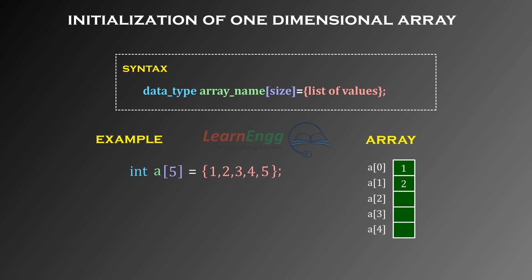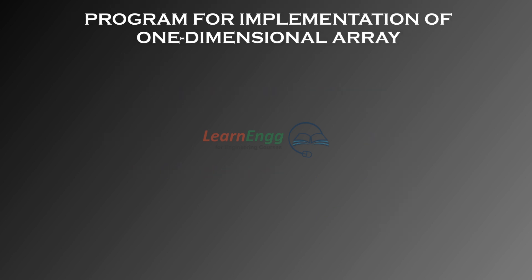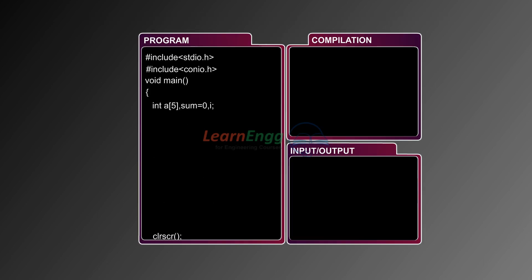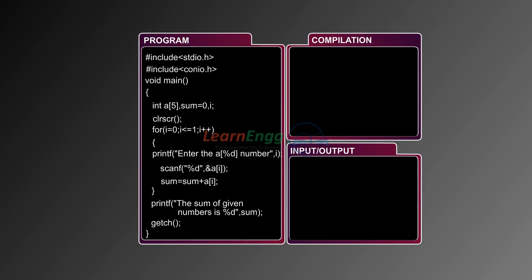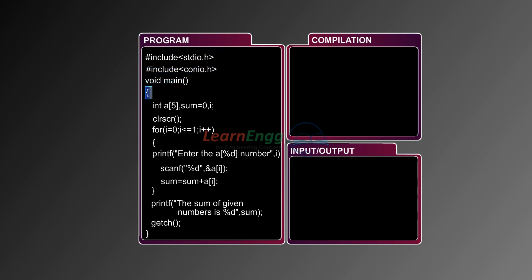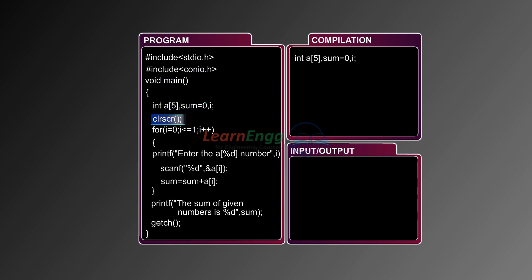Program for implementation of one-dimensional array: This program demonstrates implementation of a one-dimensional array. The preprocessor directive is used to link to the C library function. From void main(), program execution starts inside the main function. We declare a one-dimensional array named 'a' with size five, set sum equal to zero, and use the clrscr() function to clear the screen.